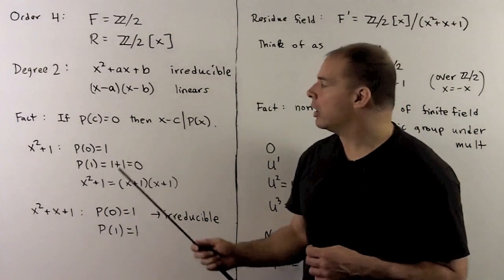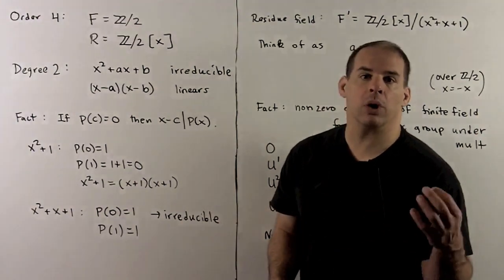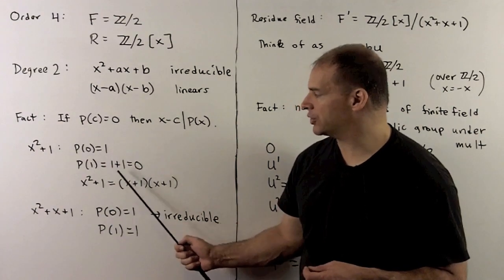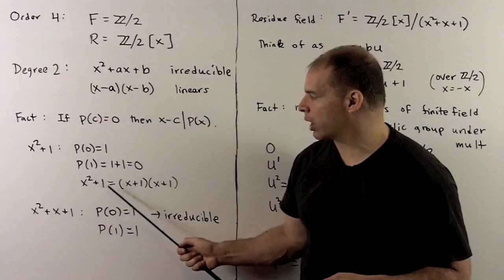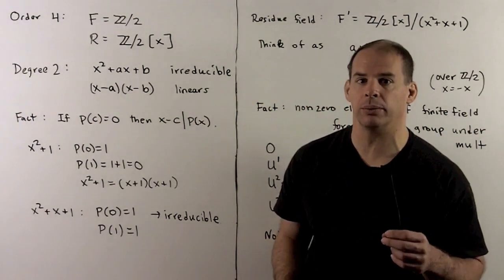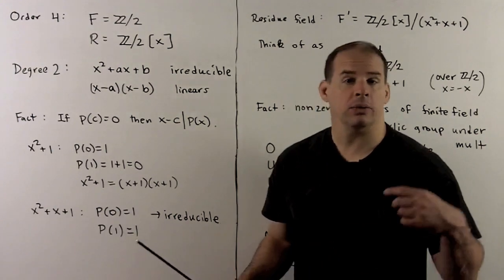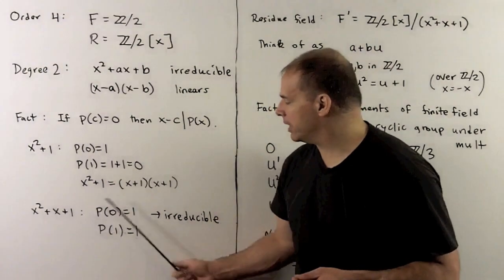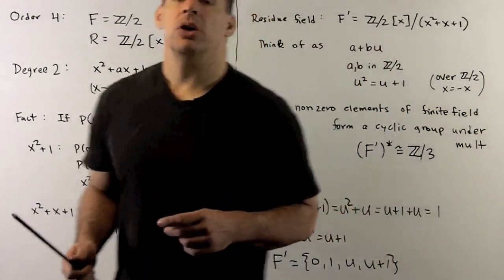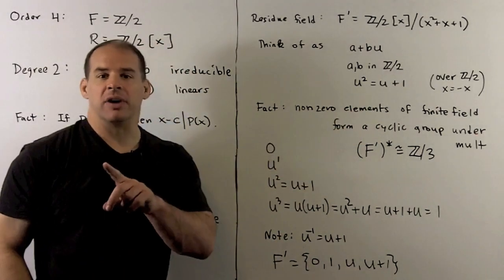If p(c) = 0 for any element c in our field, then (x − c) divides p(x). So to find linear factors we check every element in the field. Working over Z mod 2: for x² + 1, p(0) = 1 and p(1) = 1 + 1 = 2 ≡ 0, so (x + 1) divides x² + 1 — indeed x² + 1 = (x+1)², where the middle term vanishes in Z mod 2. For x² + x + 1, p(0) = 1 and p(1) = 1, so we've checked all field elements and this polynomial is irreducible over Z mod 2.